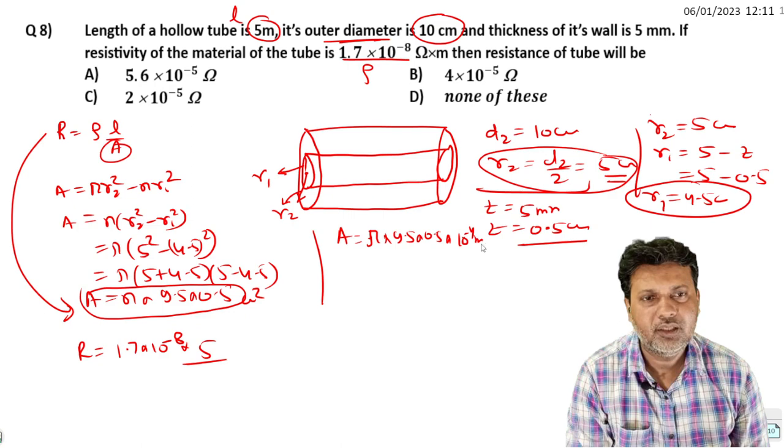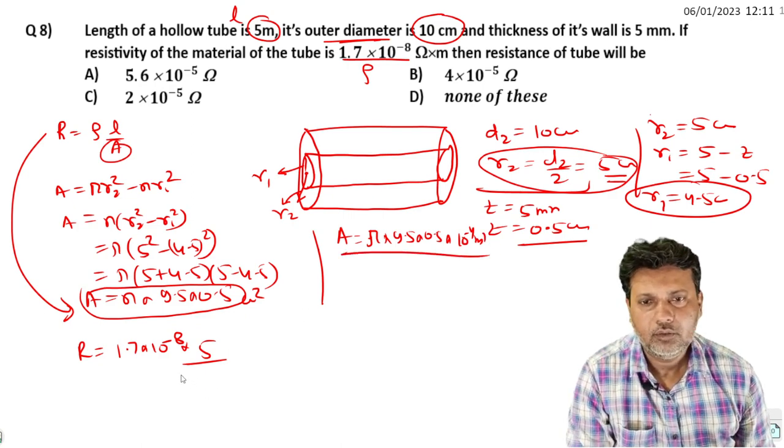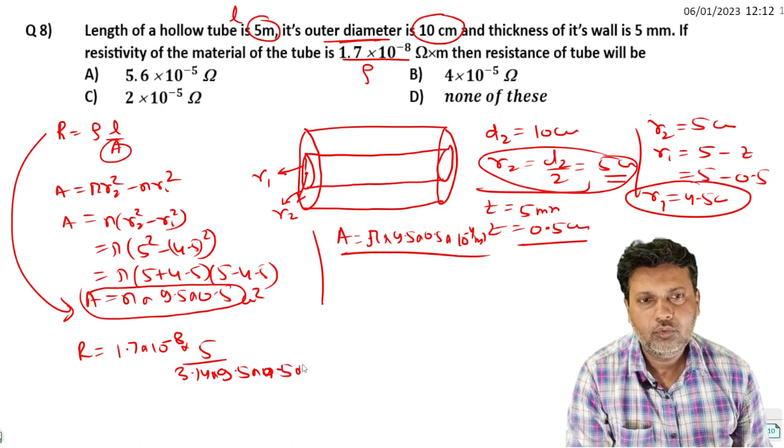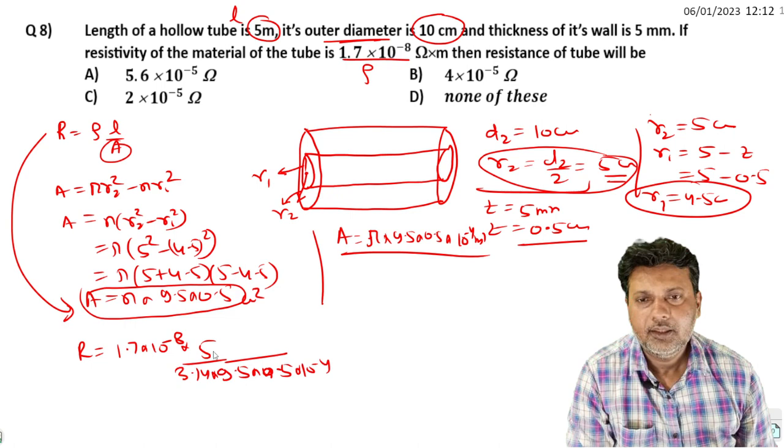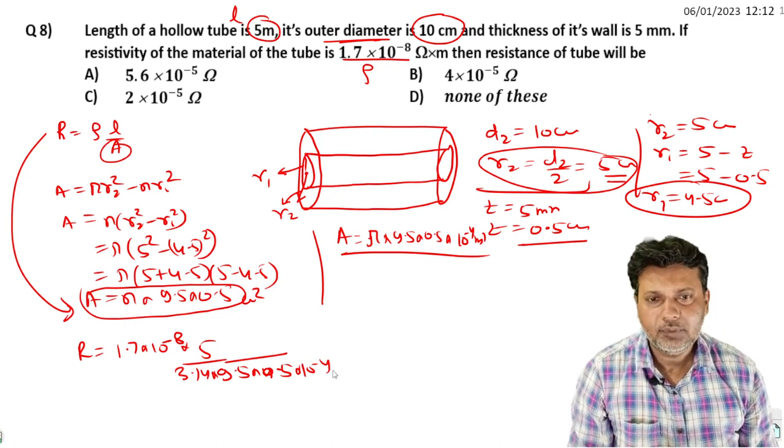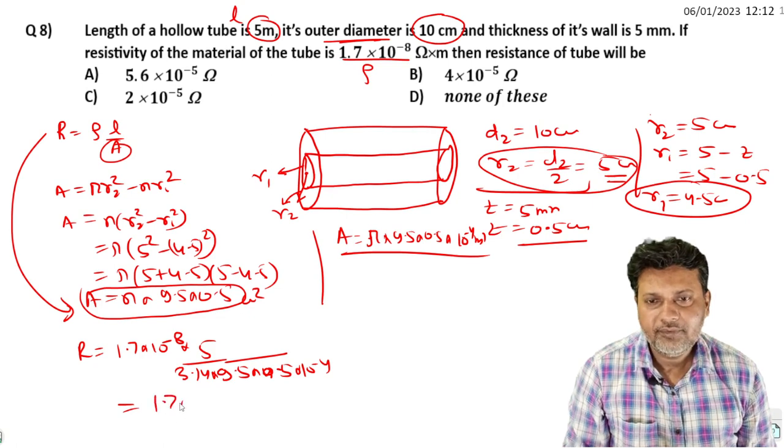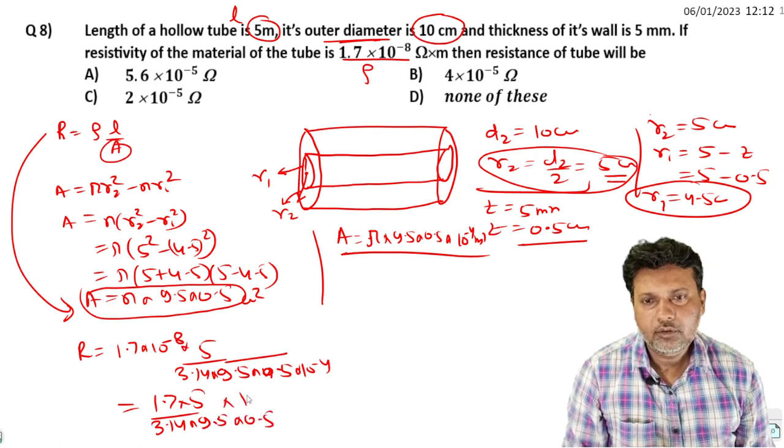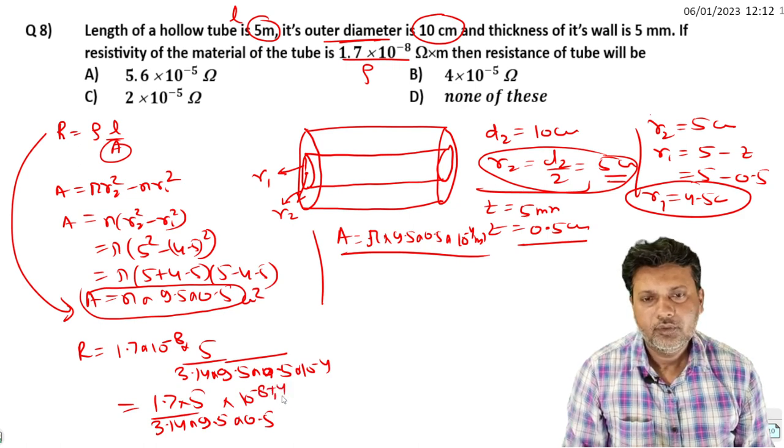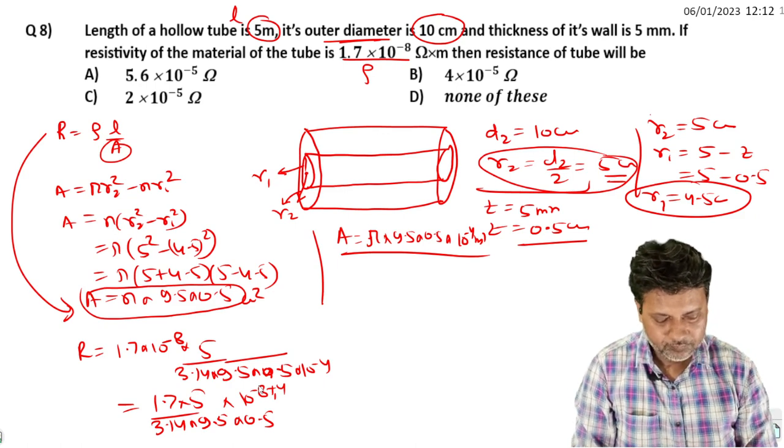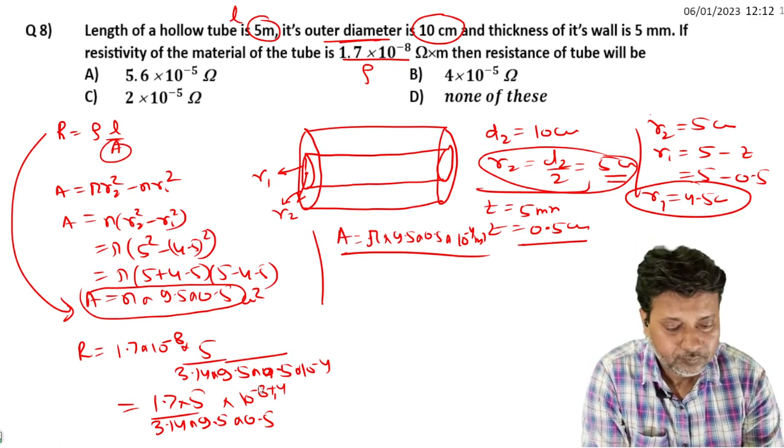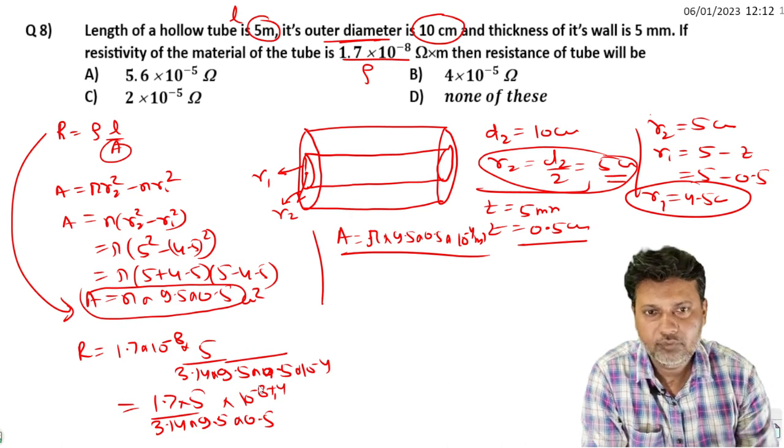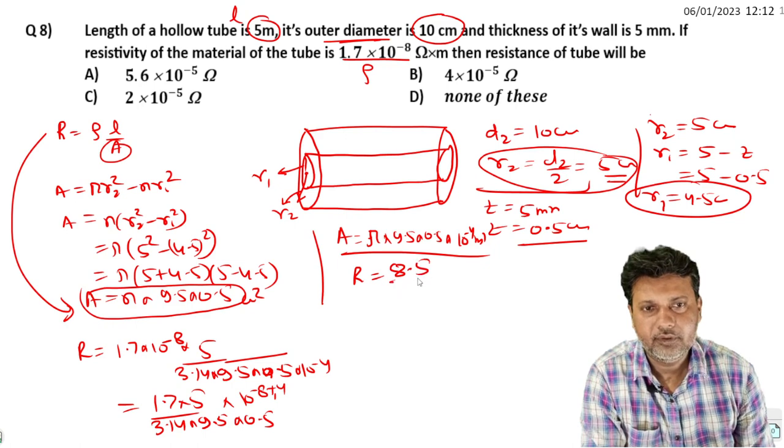Let me calculate: 1.7 times 5 equals 8.5. Divided by 3.14 times 9.5 times 0.5, which equals 14.915. So 8.5 divided by 14.915 equals 0.5683.